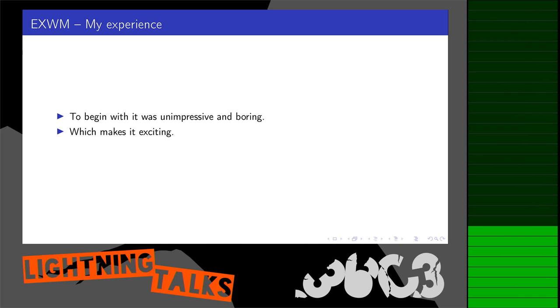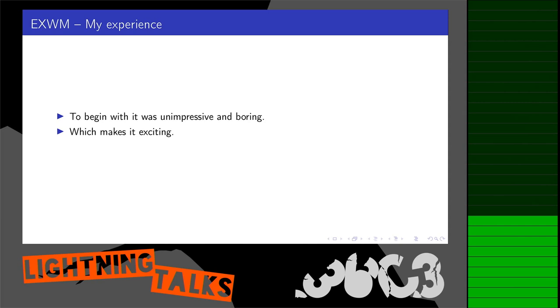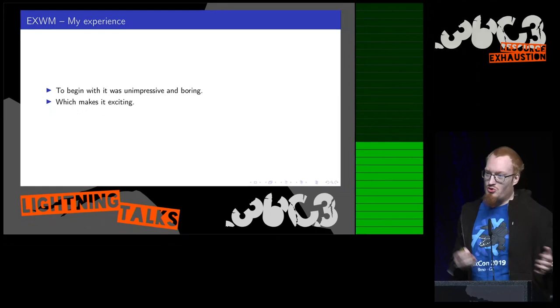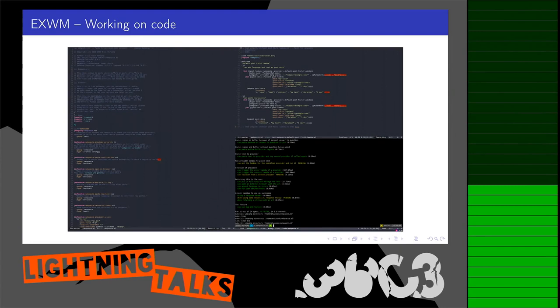Being very comfortable with Emacs makes it exciting when you have it as a window manager. Here I'm running a bunch of graphical applications, and all the key bindings used for managing Emacs translate to how you manage graphical applications within EXWM. So you use the same key bindings when managing graphical applications as you do when managing projects, code, or running your terminal within Emacs.